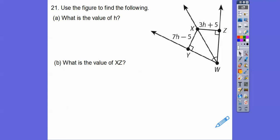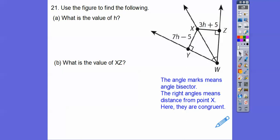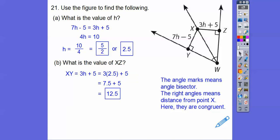These markings say angle bisector. Any point that's on the angle bisector says that this piece equals this piece. So 7H minus 5 equals 3H plus 5. Add 5 to both sides, we get 7H equals 3H plus 10. Subtract 3H, we get 4H equals 10. So H equals 2.5. What's the value of XZ? We're going to plug that into 3H plus 5. So 3 times 2.5 is 7.5. So 7.5 plus 5 is 12.5.